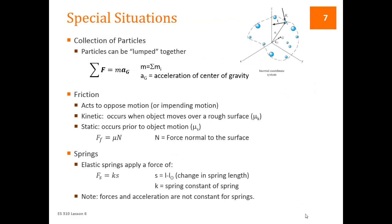A couple of special situations. Usually we have a whole bunch of particles, or a solid object made up of a whole bunch of particles. We don't always have single particles, though sometimes things can act like single particles. So if we lump these particles together to create a solid body, we still have the same equation: sum of forces equals mass times acceleration. But the acceleration of what? If you clump particles together, some may not be accelerating at the same rate, so we use the acceleration of the center of gravity.